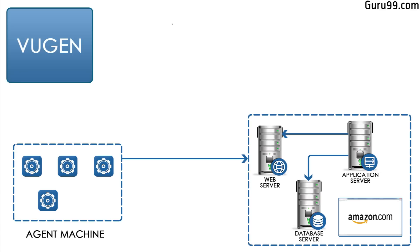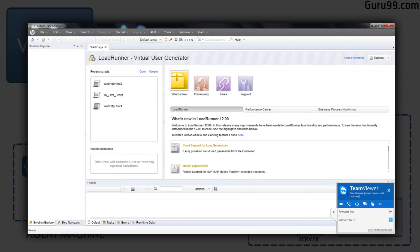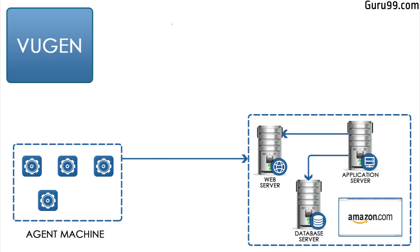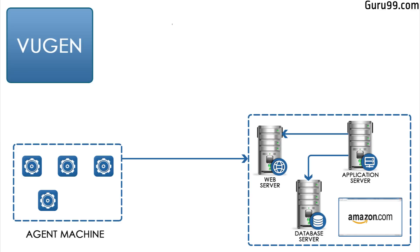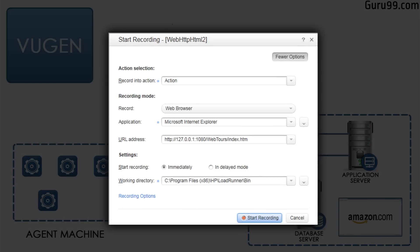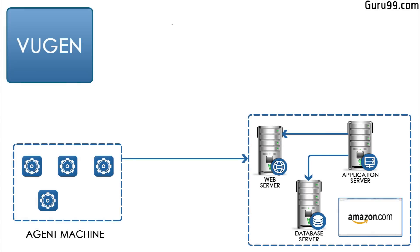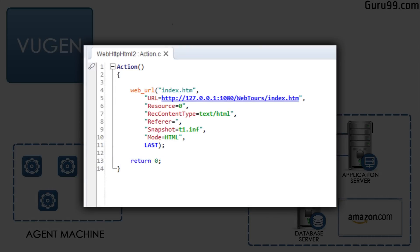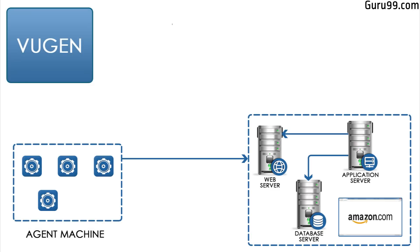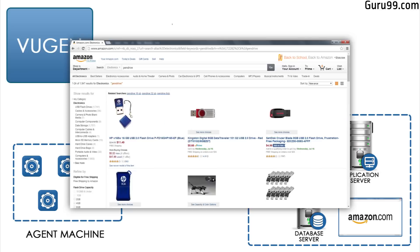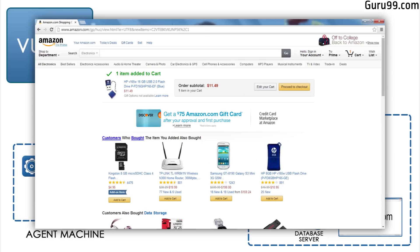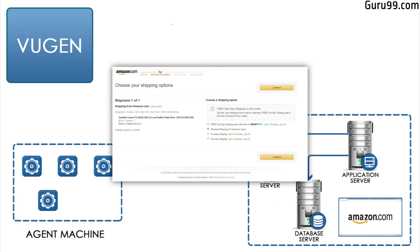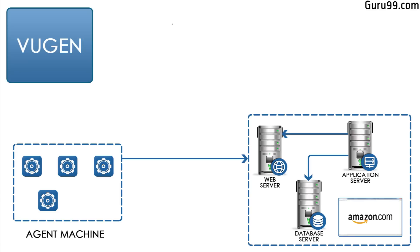VU Gen, or Virtual User Generator, is an IDE (Integrated Development Environment), or a rich coding editor. VU Gen is used to replicate system under load (SUL) behavior. VU Gen provides a recording feature which records actions performed on the system under load in the form of a coded script, also called a VUser script. Considering the Amazon example, VU Gen recorded the following business processes: 1) Surfing the products page of Amazon.com, 2) Checkout, 3) Payment processing, and 4) Checking My Account page. These recorded business processes can be later replayed by the VUsers.